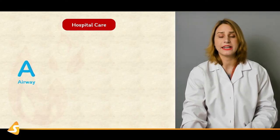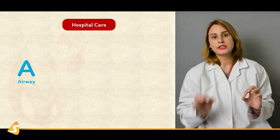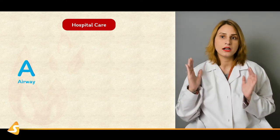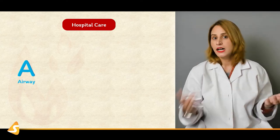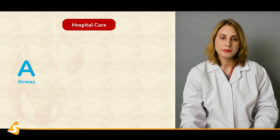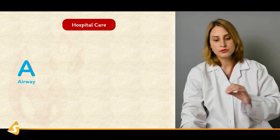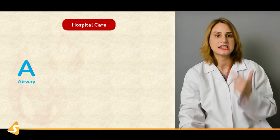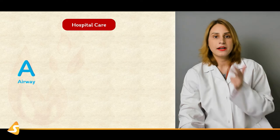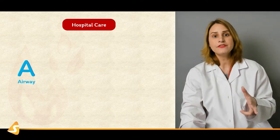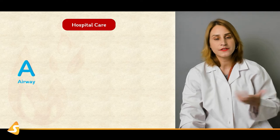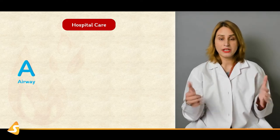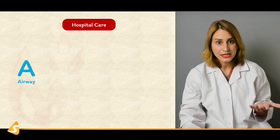Now regarding hospital care, a very important thing is a primary survey. Whenever a trauma patient or burn victim comes in, they have to go through a primary survey. Primary survey includes A, B, C, D, E — and there is another element F but in most trauma patients we do A, B, C, D, E. A stands for airway: starting from the airway, you have to check if the airway is patent. In case of face, head, and neck injuries, there is possibility of damage to the airway and inhalation injury.